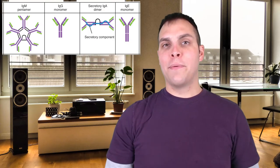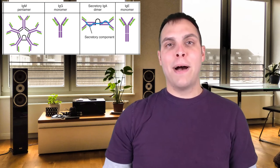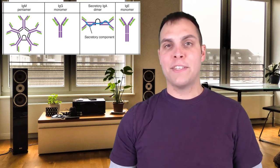Another immunodeficiency targeting B cells is called common variable immunodeficiency. We believe it results from mutations impacting various CD receptors on the surface of B cells, causing these cells to fail to differentiate into plasma B cells — meaning they don't produce B cells capable of properly making antibodies. Depending on the mutation, some patients produce almost no antibodies, while others produce only one class of antibodies but lack others.